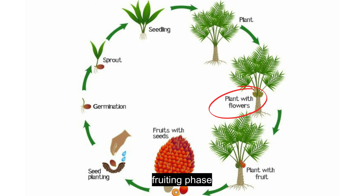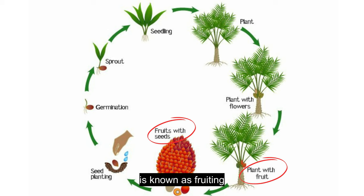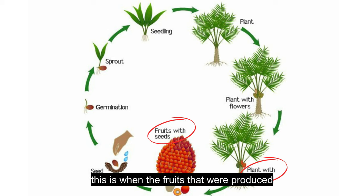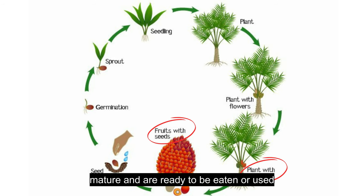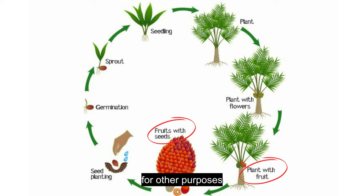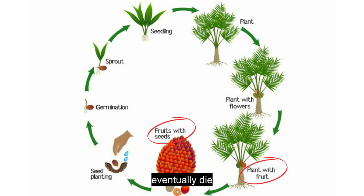Fruiting phase: the final stage in a palm tree's life cycle is known as fruiting. This is when the fruits that were produced during reproduction mature and are ready to be eaten or used for other purposes, such as making oil or cosmetics. Once all of the fruit has been harvested from a palm tree's life cycle, it will eventually die.